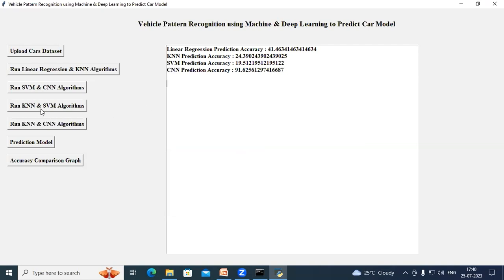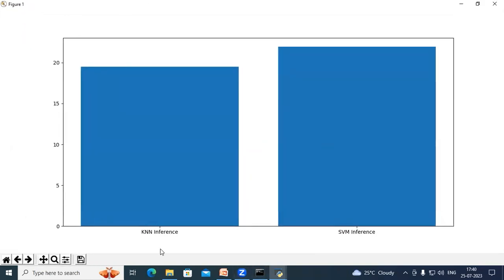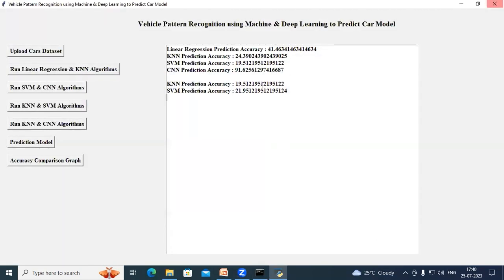Now click on run KNN and SVM algorithms. So here we are using inference dataset and we are comparing the KNN model and SVM model in this graph. Close this graph and we can see the accuracy of these models in the text area.